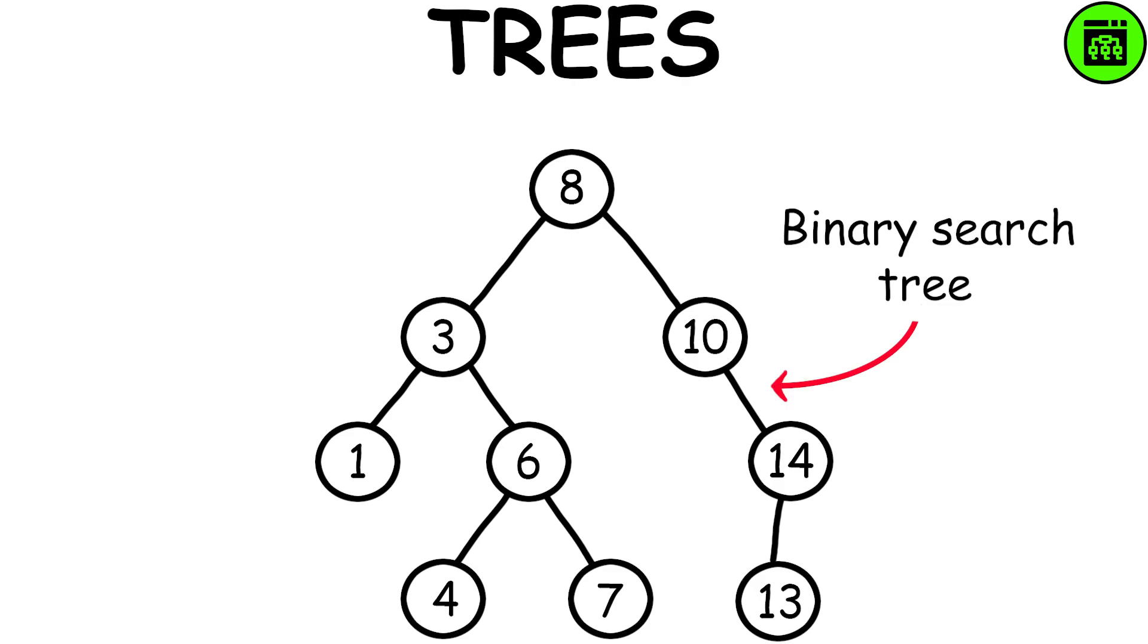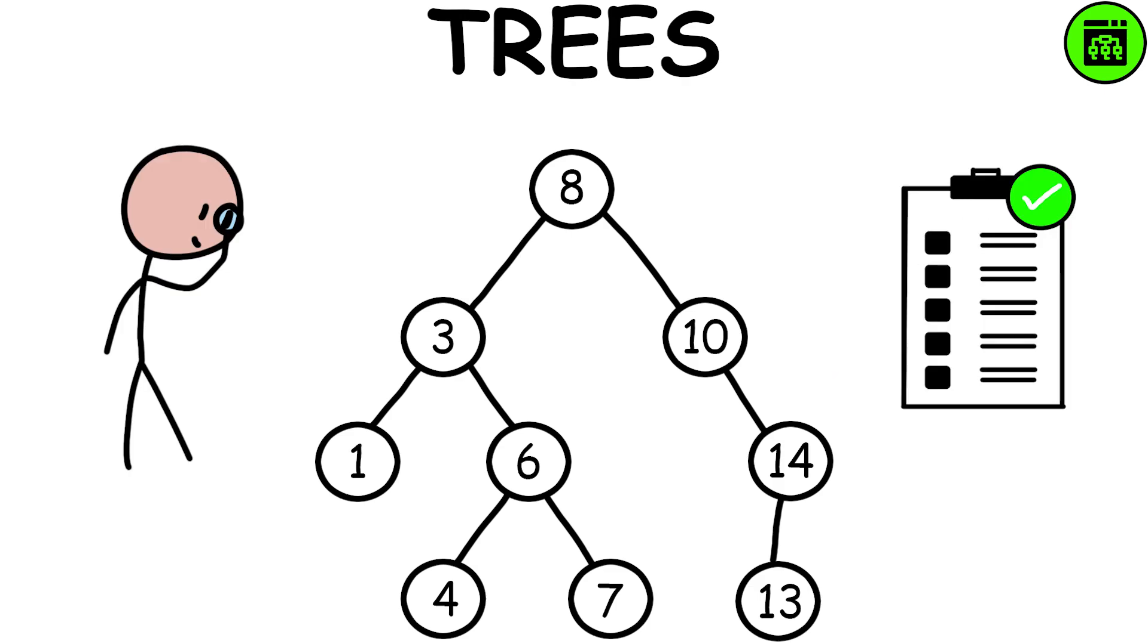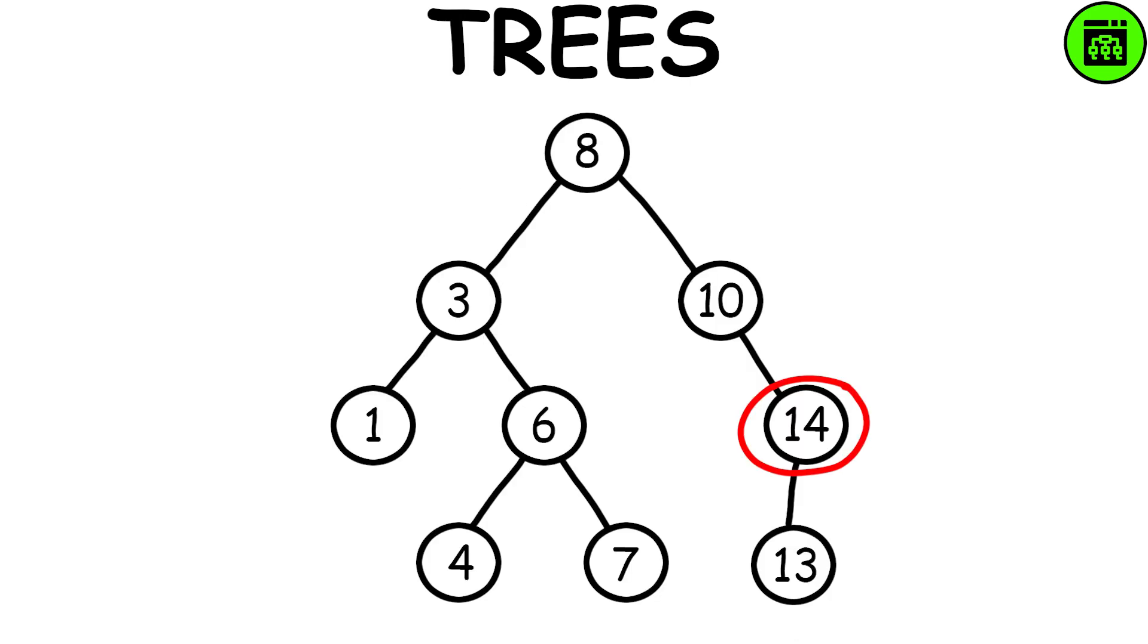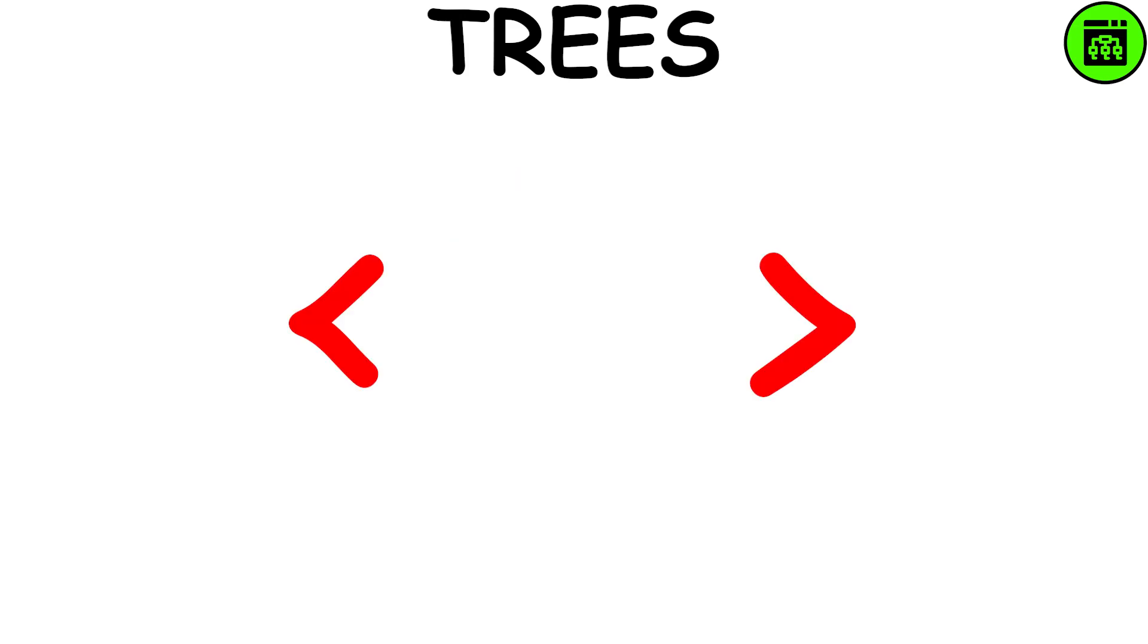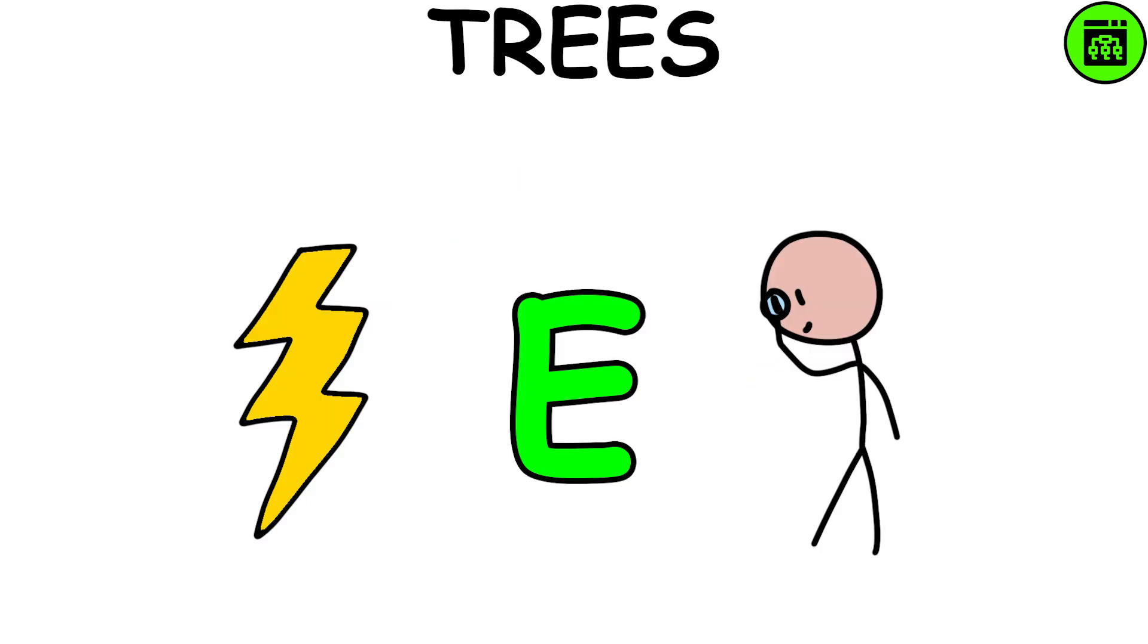One useful kind of binary tree is a binary search tree. In this tree, the values are organized so that it's easy to find what you're looking for. For example, if you're searching for a number, you can quickly figure out which direction to go, left or right, based on whether it's smaller or bigger than the current value. This makes searching for specific values super fast and efficient.